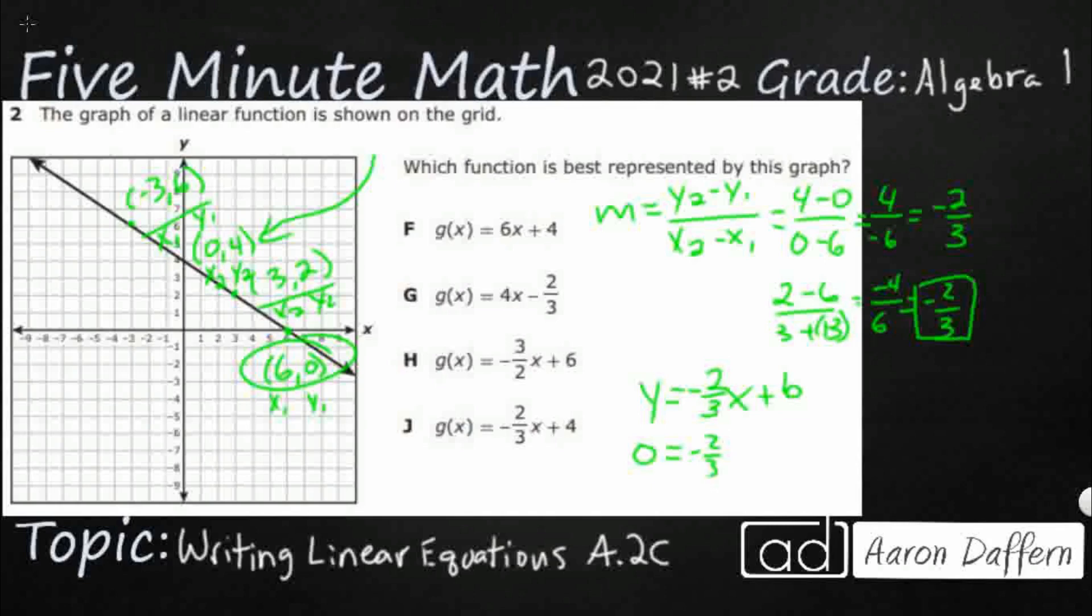So I'm going to plug in my zero as my y. I'm going to do negative two thirds as my m. I'm going to plug in my six as my x. And I can just now try to isolate that b.